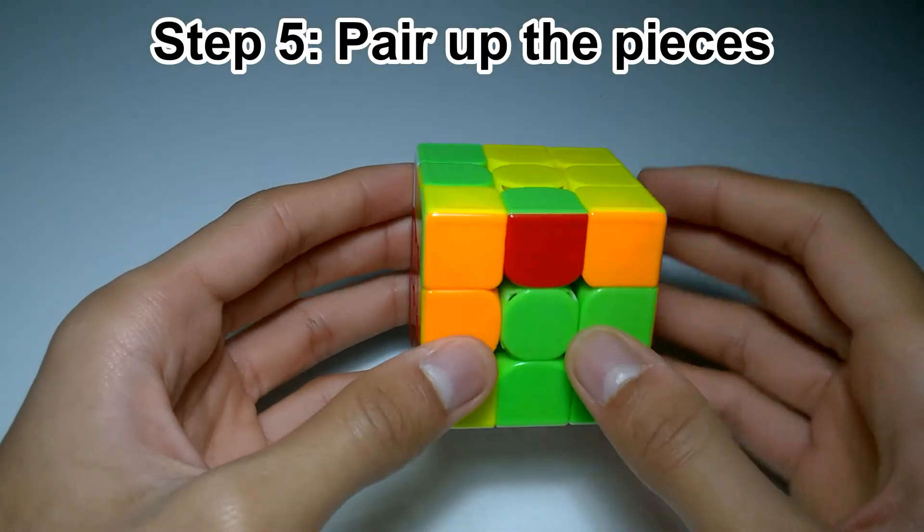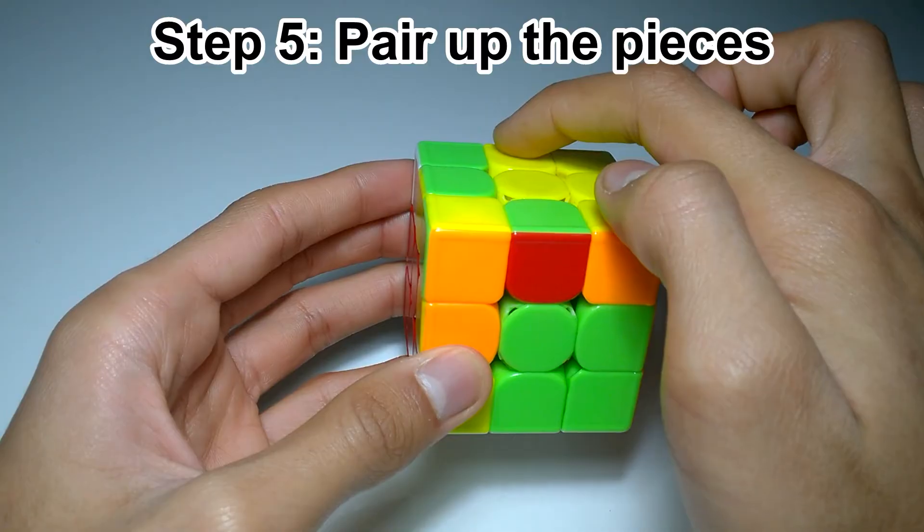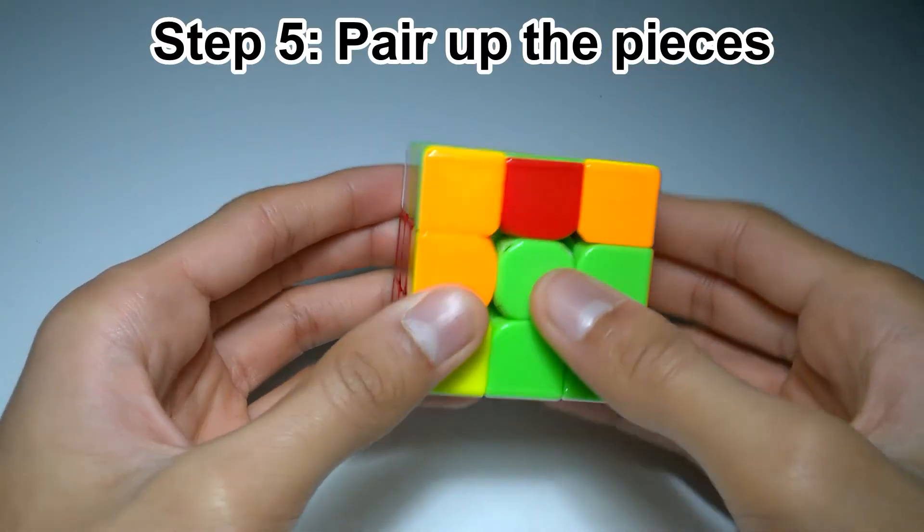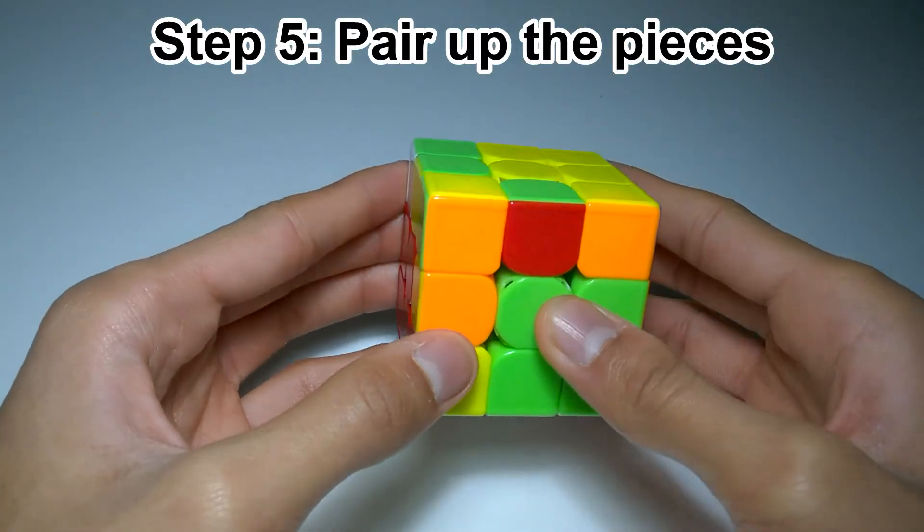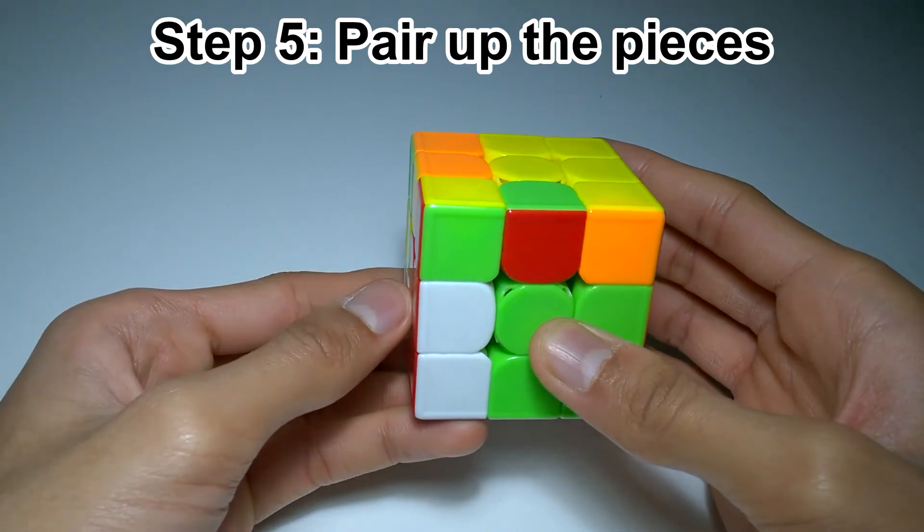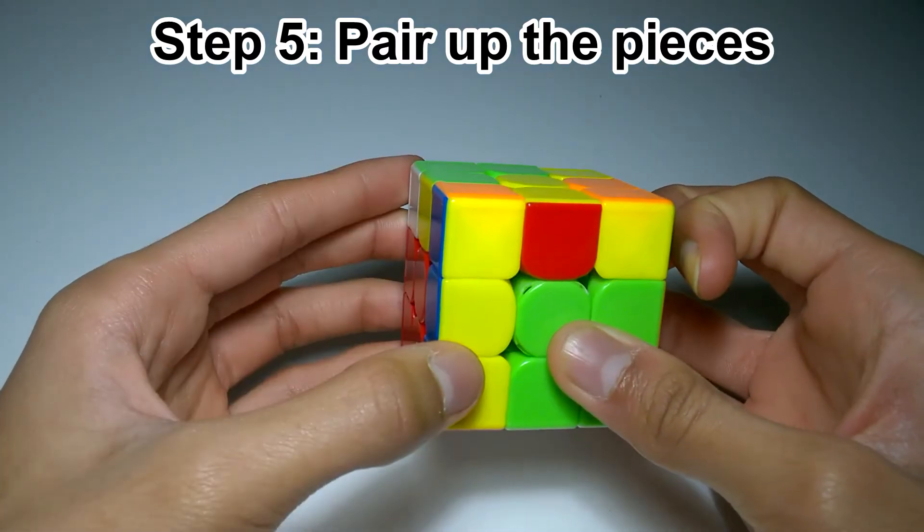For step five, we need to move this edge so that it's at the back next to the corner, which will complete our F2L pair. So we'll hide the corner by leaving it away, put the edge at the back, and then bring the corner back.